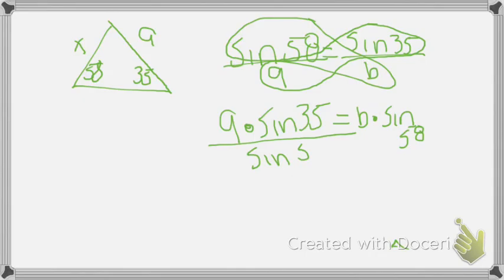And then 9 over sine 35 had to be divided by sine 58 to get B by itself. And B ended up equaling 6.0.